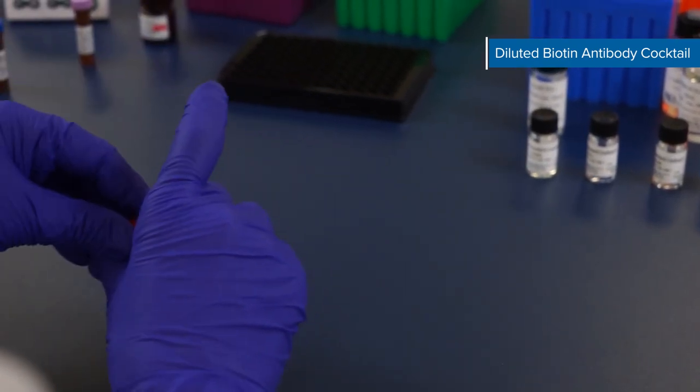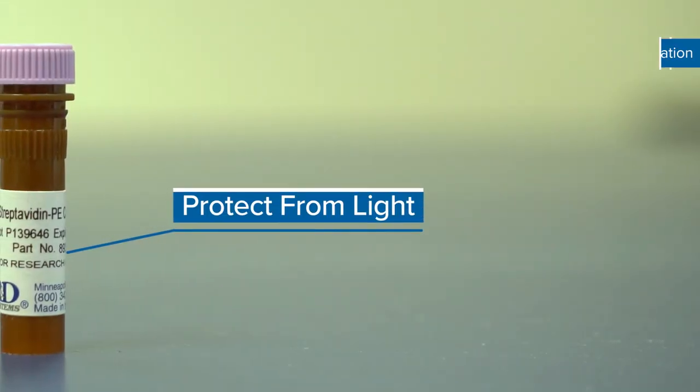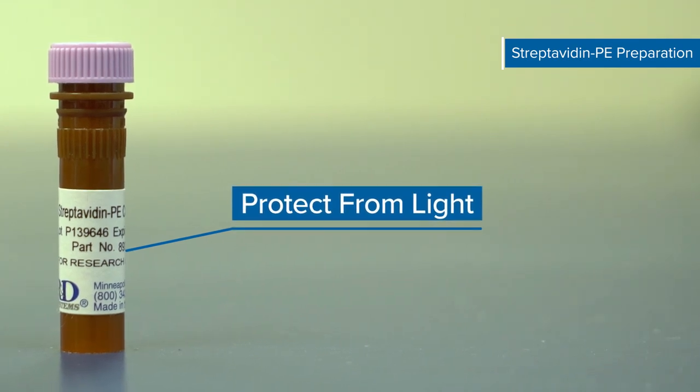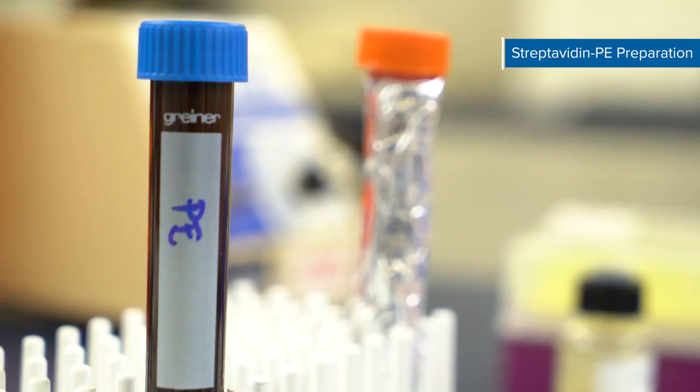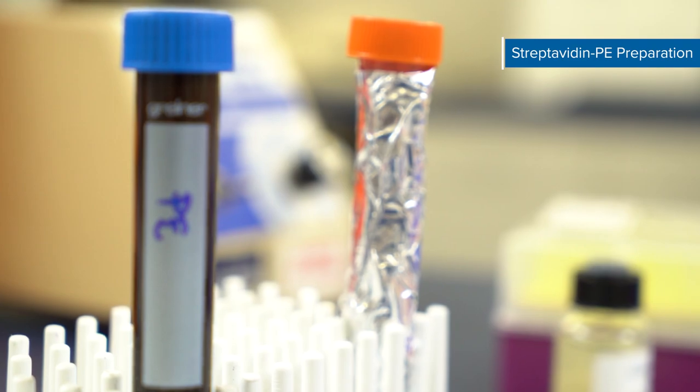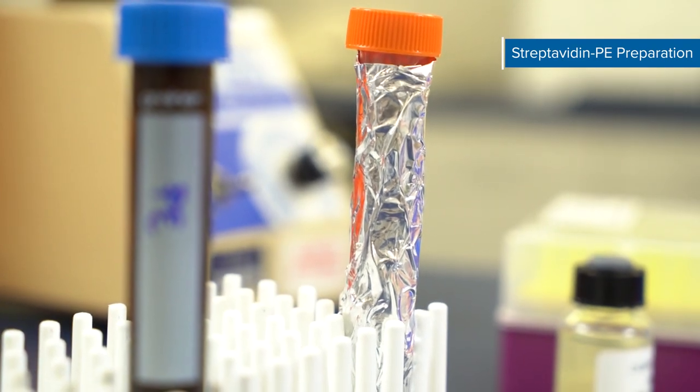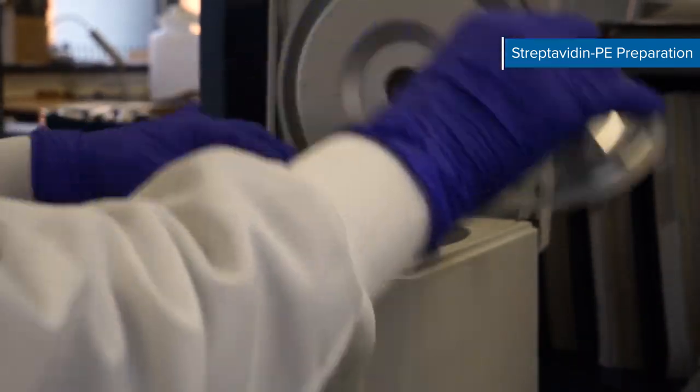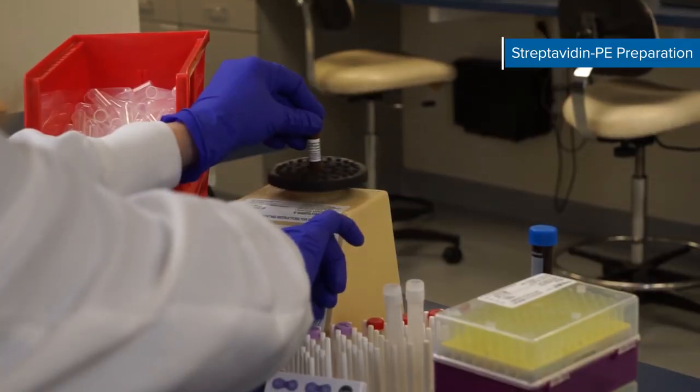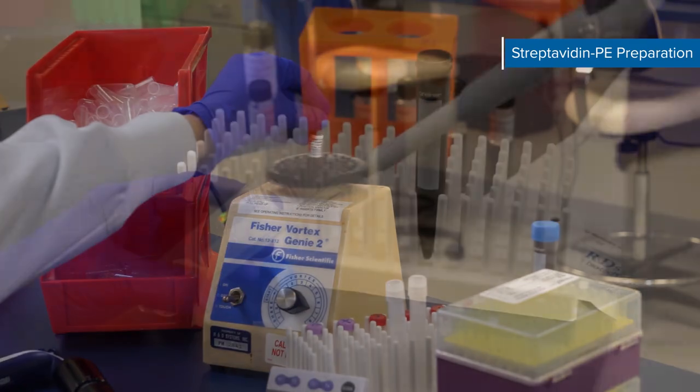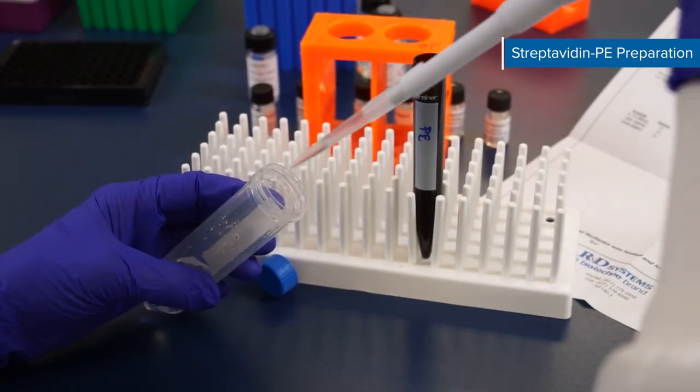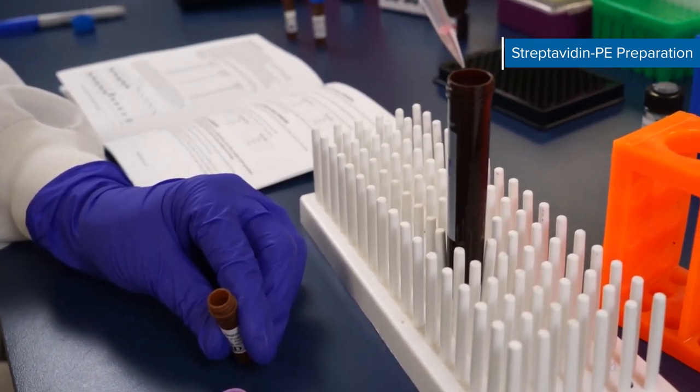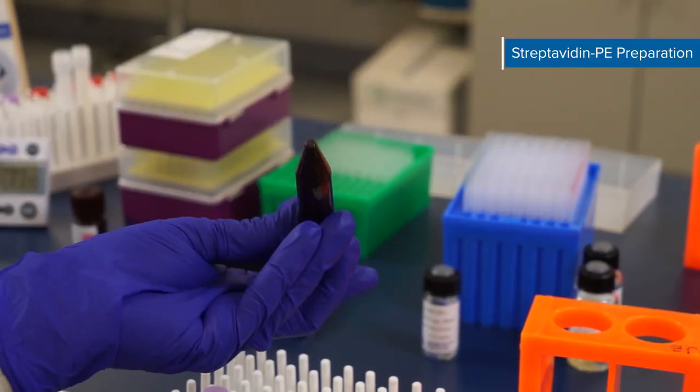Now prepare the streptavidin PE. Streptavidin PE must be protected from light during handling and storage. Use a polypropylene amber bottle or a polypropylene test tube wrapped in aluminum foil. Centrifuge the streptavidin PE vial for 30 seconds at 1,000 times the force of gravity. Then gently vortex the vial without inverting it. Dilute the streptavidin PE concentrate to a 1x concentration in wash buffer and mix gently.